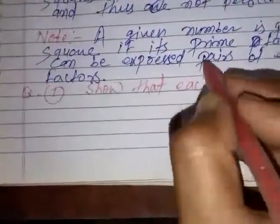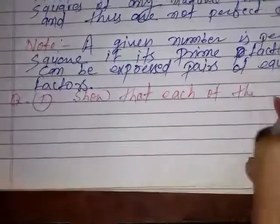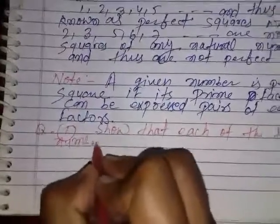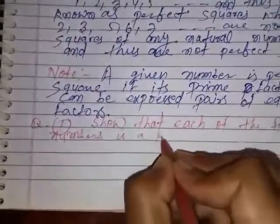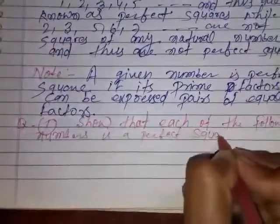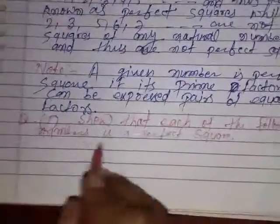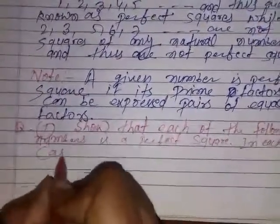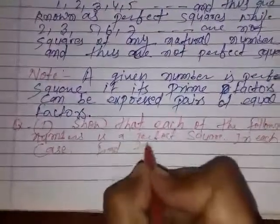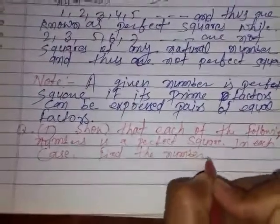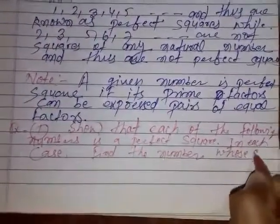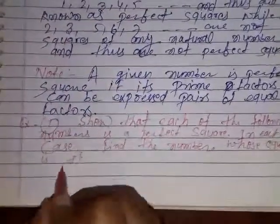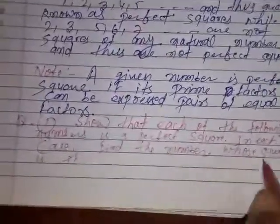So that each of the following numbers is a perfect square. In each case, find the number whose square is, find the number.